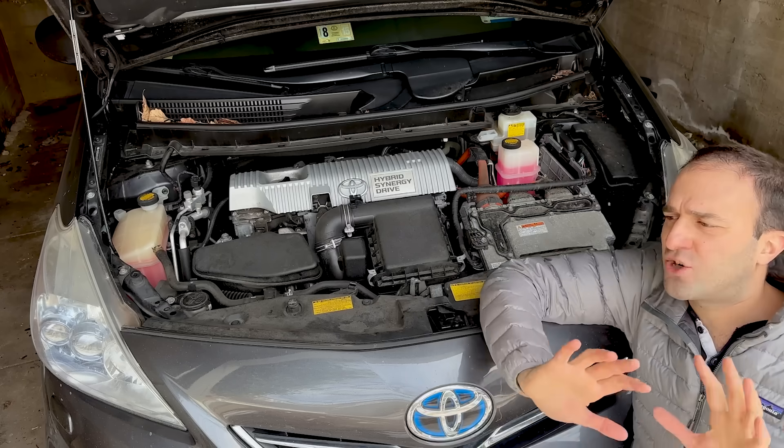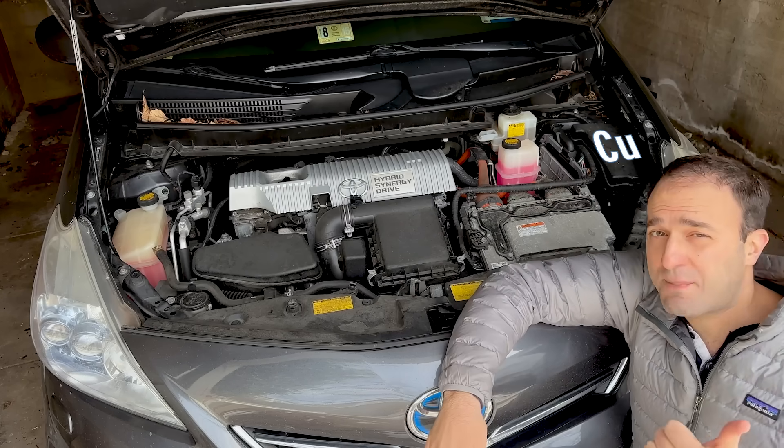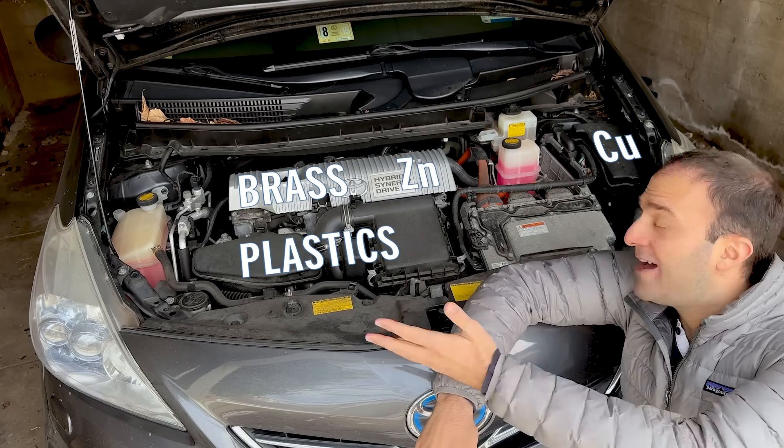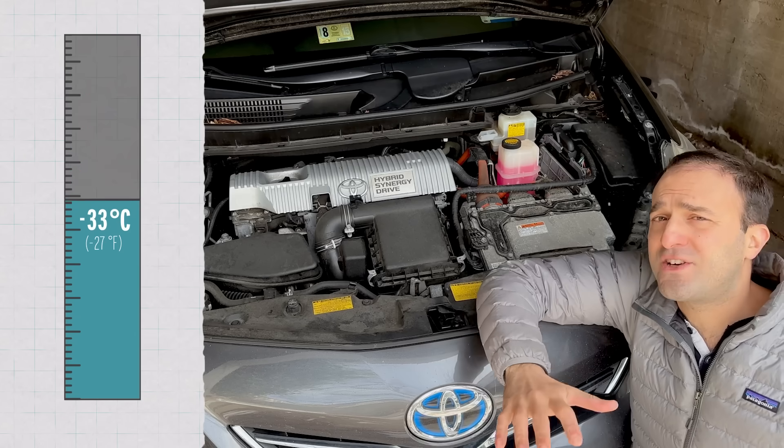Ammonia has some downsides that are unrelated to its combustion chemistry. First, it's corrosive to copper, brass, zinc alloys, and some plastics, which can be found in many a gasoline engine.